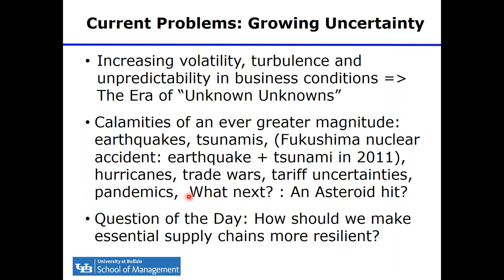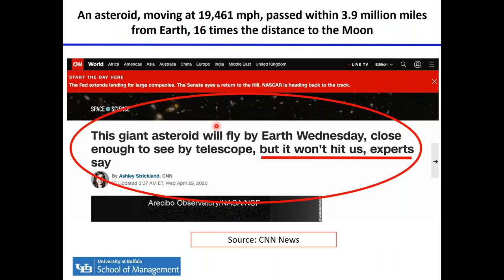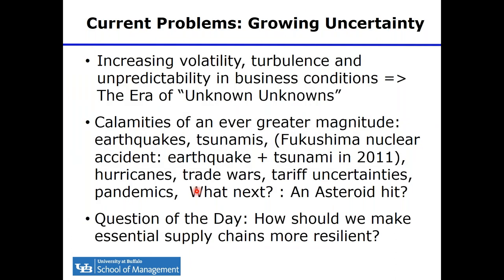The question is, what next? What are we going to be hit with next? Earlier this week, there was a news item about a giant asteroid that flew past Earth at just 16 times the distance to the moon at 20,000 miles per hour — our next episode could very well be something of that magnitude. So the question of the day is: what are all the things we can do to make our supply chains, especially for essential items, much more resilient? That's the topic.